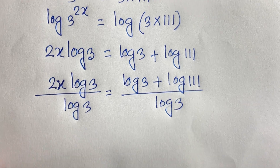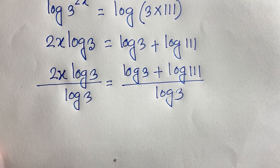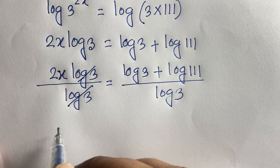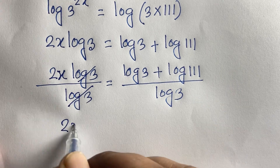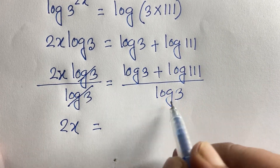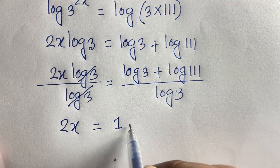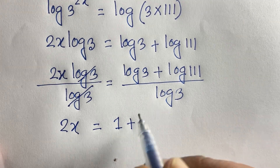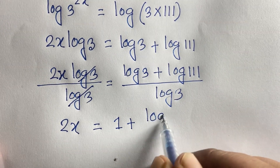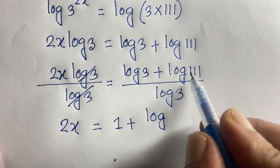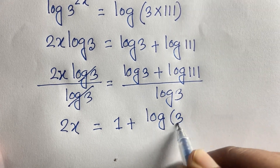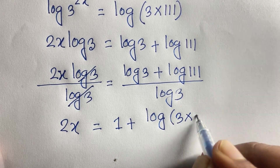The log 3 terms cancel on the left, giving 2x = 1 + (log 111 / log 3). Since 111 = 3 × 37, we have log 111 = log(3 × 37), so 2x = 1 + log(3 × 37) / log 3.